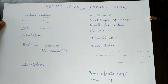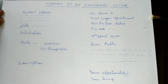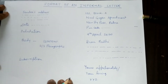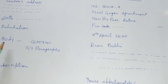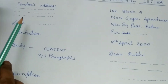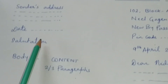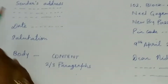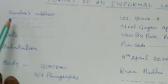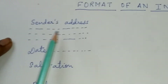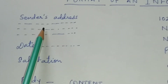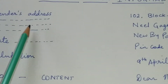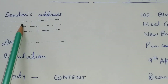Today I am going to focus on the informal letter — how we will write one. The format of an informal letter is like this. On the left-hand side of your sheet or paper, at the top, you will write the address of the person who is writing the letter. This is the sender's address.